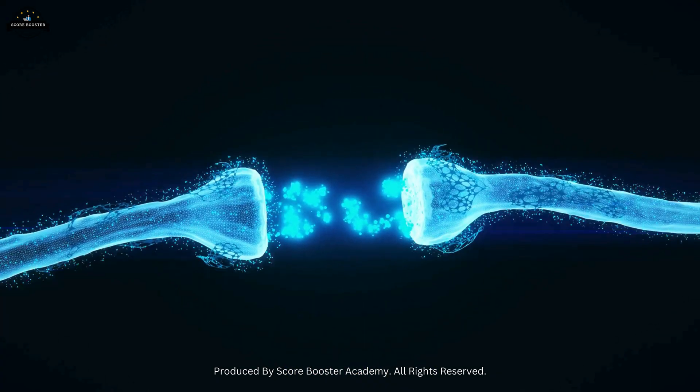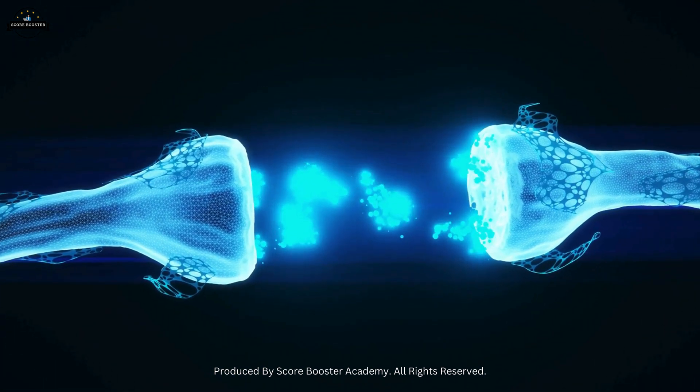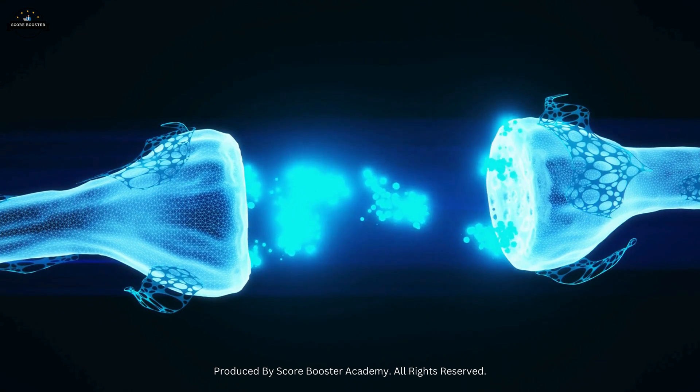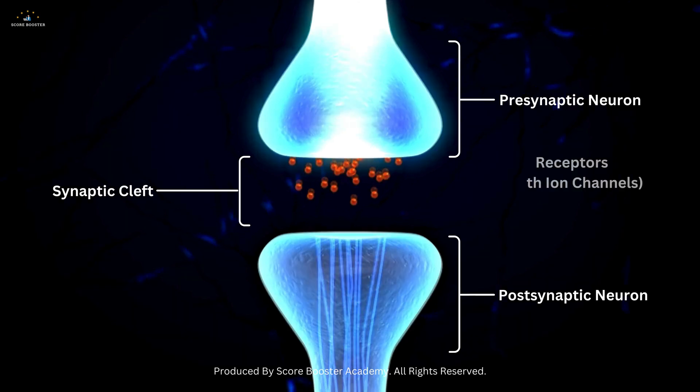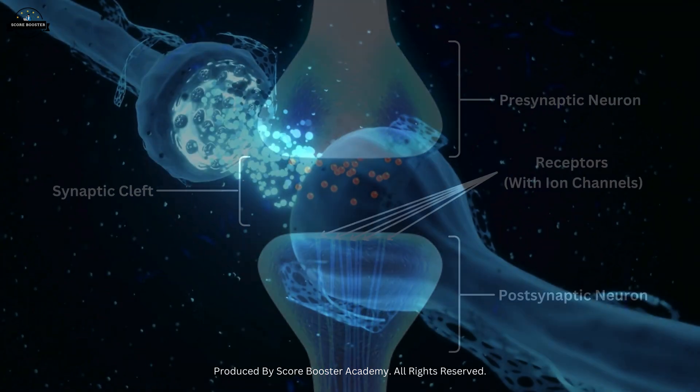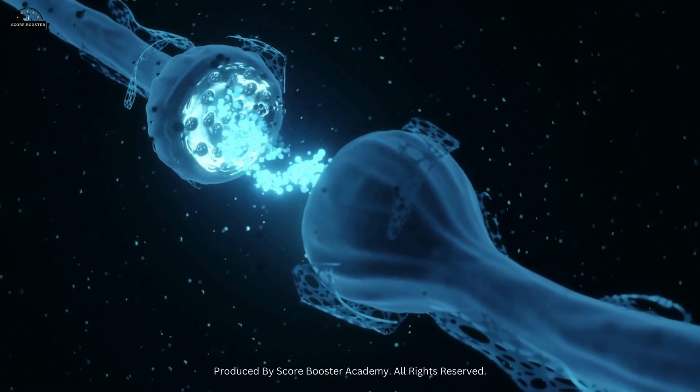Once the neurotransmitters are released into the synaptic cleft, they must travel across this narrow space to reach the post-synaptic neuron. The post-synaptic neuron is lined with specialized proteins known as receptors. These receptors are like locks waiting for the right key, the neurotransmitters to bind to them.